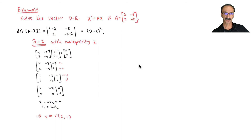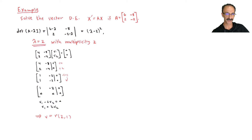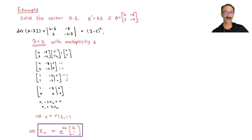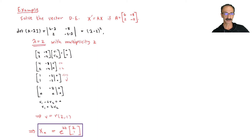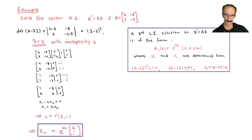We need to get to the main part of this section. We have only one eigenvector for a 2×2 matrix — that means it's defective, matching our section title. So we have x_sub_0 = e^(lambda*t) * v_sub_0 = e^(2t) times the column vector [2, 1]. Playing the game again — all the relevant information is displayed so we stay focused.